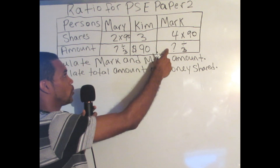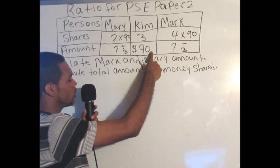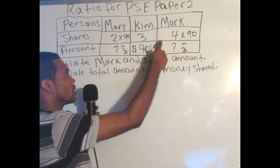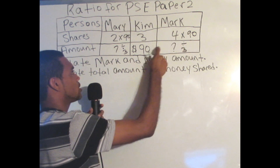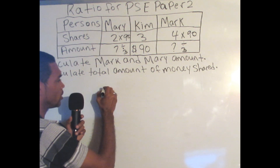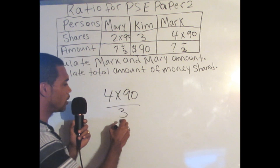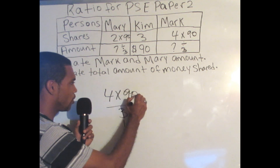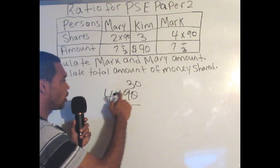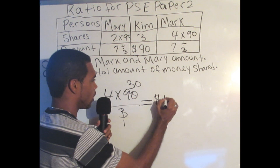So remember, Mark is a ratio of 4 and we don't know how much Mark received. But they gave us that Kim received $90, and Kim is a ratio of 3. So Mark's amount is: ratio 4 times $90 divided by 3. We could simply cross-multiply. 3 goes into 3 once, and 3 goes into 90 thirty times. So we're left with 4 times 30, and 4 sets of 30 is $120.